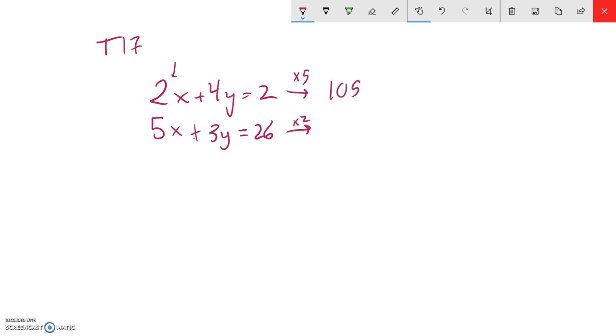Multiply everything in here by 5, so it's 10x plus 20y equals 10. And if I multiply everything in here by 2, that's 10x, that's 6y. And let's see, 26 times 2, that's 52.